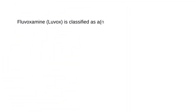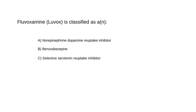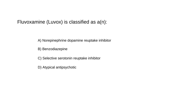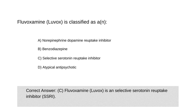Fluvoxamine (Luvox) is classified as: A) norepinephrine dopamine reuptake inhibitor, B) benzodiazepine, C) selective serotonin reuptake inhibitor, or D) atypical antipsychotic. The correct answer is C. Fluvoxamine (Luvox) is a selective serotonin reuptake inhibitor, so it's an SSRI.